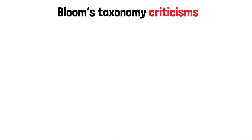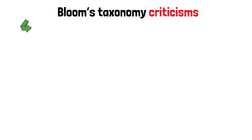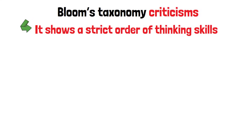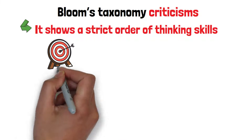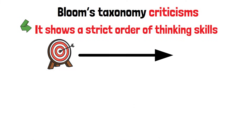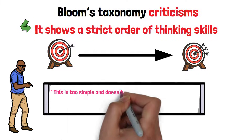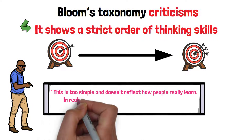However, Bloom's Taxonomy isn't without its criticisms. A main criticism is that it shows a strict order of thinking skills, making it seem like you need to master simple skills before moving to more complex ones. Critics say this is too simple and doesn't reflect how people really learn.